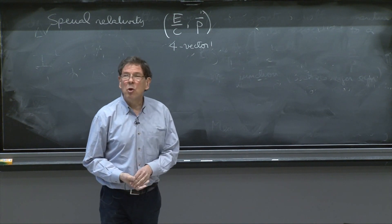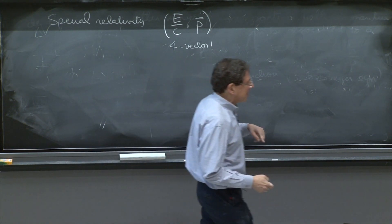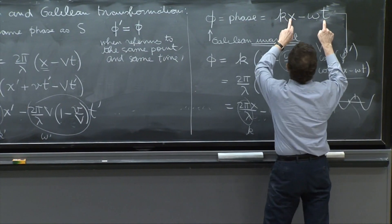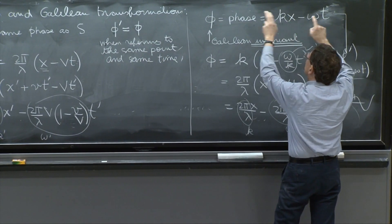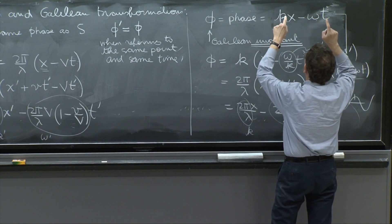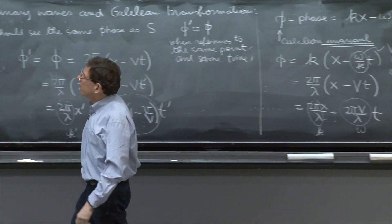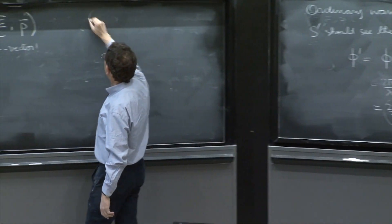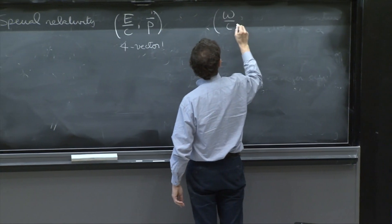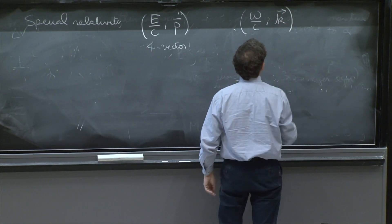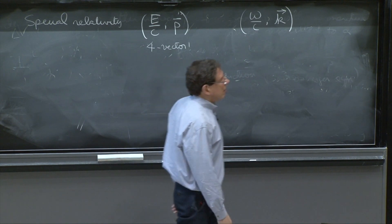Nevertheless, when you consider phases like this, and you have x and t that form a four vector, the good behavior of phases also imply that k and omega form a four vector. In fact, omega in relativity, omega over c and the k vector form a four vector.